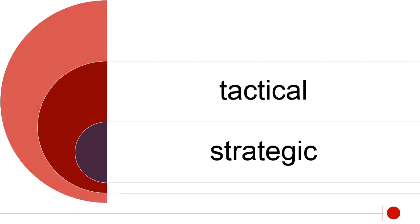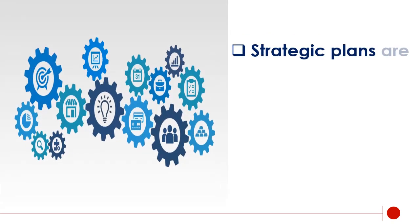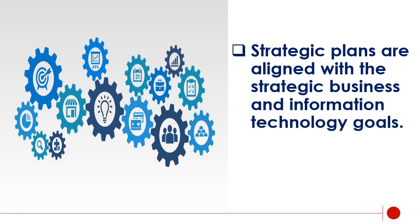In order to achieve organizations' information security goals, we need to implement strategic, tactical, and operational plans. Strategic plans are aligned with the strategic business and information technology goals. Strategic plans guide the long-term security activities — 3 to 5 years or more.